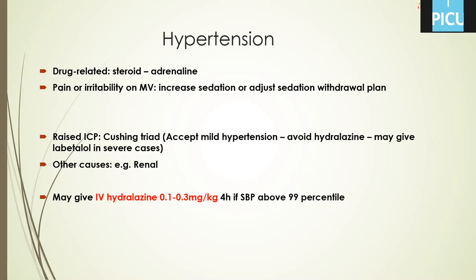Hypertension may also be due to raised intracranial pressure, as in cases of hypertensive encephalopathy. Start labetalol in severe cases. Avoid hydralazine because it is a vasodilator — it will increase cerebral blood flow and raise intracranial pressure further. Other causes include renal and cardiac conditions. If you are using steroids for a chest condition, you can give IV hydralazine 0.1 to 0.3 mg/kg every 4 hours if systolic blood pressure is above the 99th percentile — define the threshold for the nurse, for example above 100 or 110, according to the age.